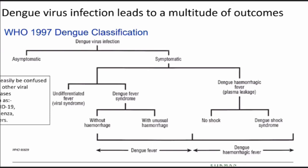WHO classified this into various outcomes. Dengue virus infection leads to multiple outcomes. The classifications start with asymptomatics and also this undifferentiated fever or viral syndrome, which can easily be confused with other virus infections — originally we would think of influenza, but maybe COVID, which also has a similar viral fever at the very start. This is the stage where we need to start knowing it's dengue, and it's difficult to identify at that stage.